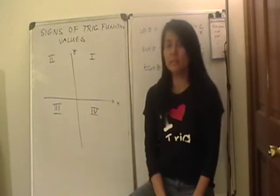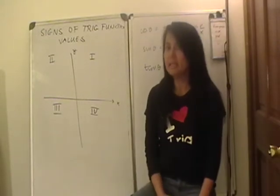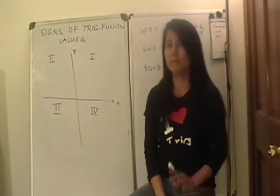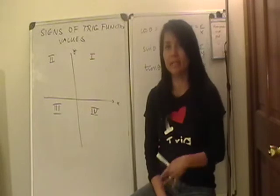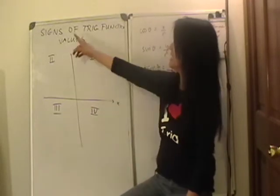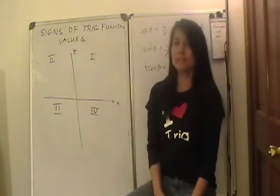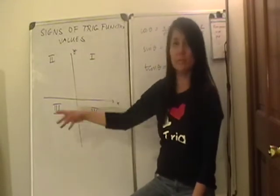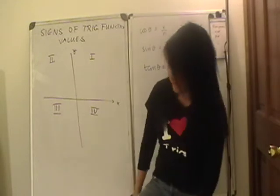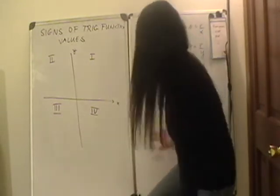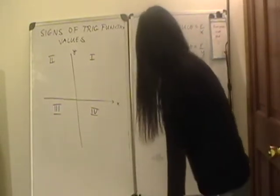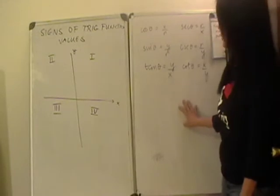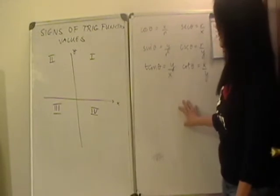Next, we want to examine the signs — whether positive or negative — of the trig function values in each quadrant: 1, 2, 3, 4. I have put down here the definitions of the six trigonometric functions.